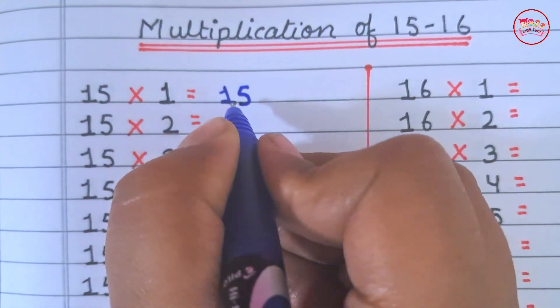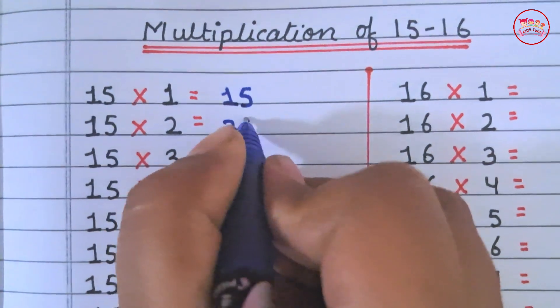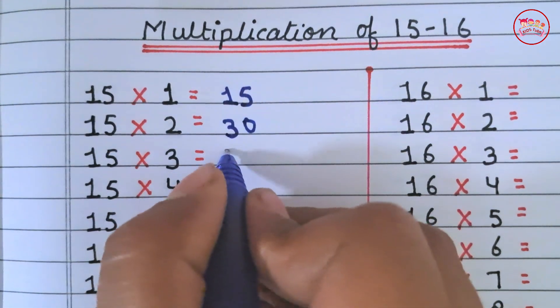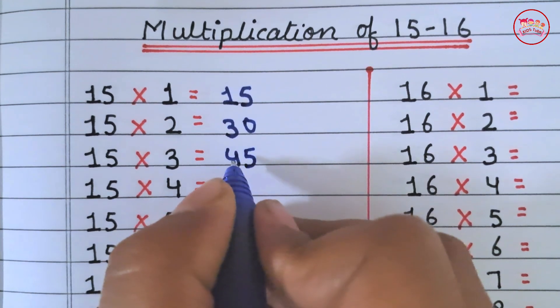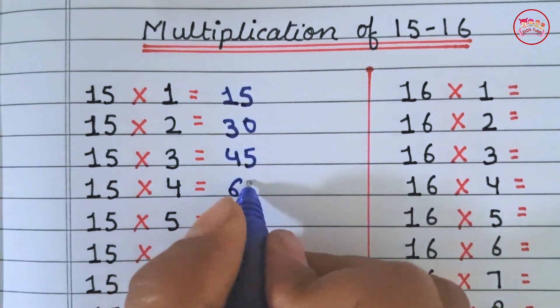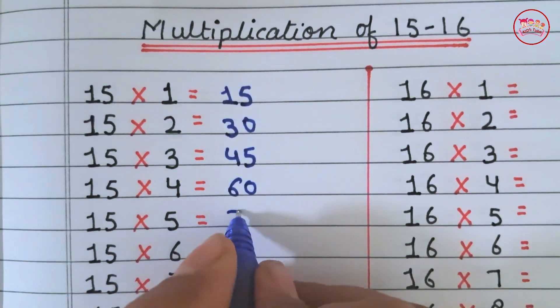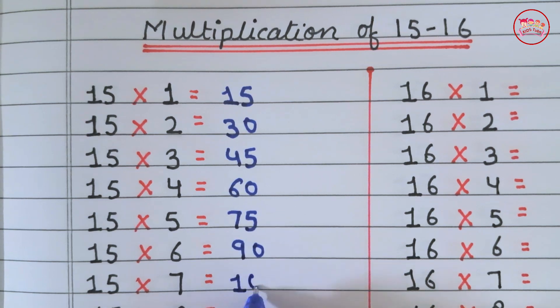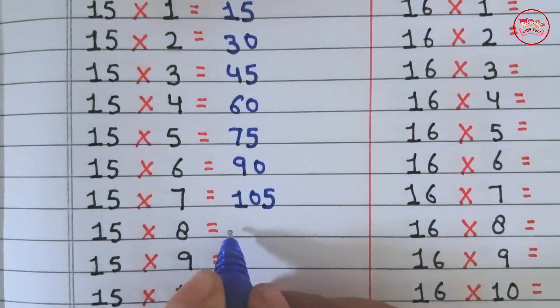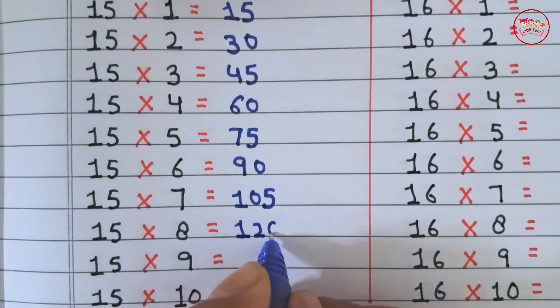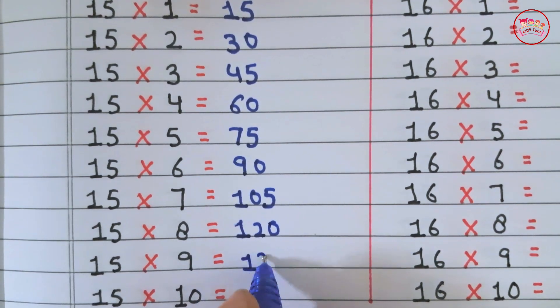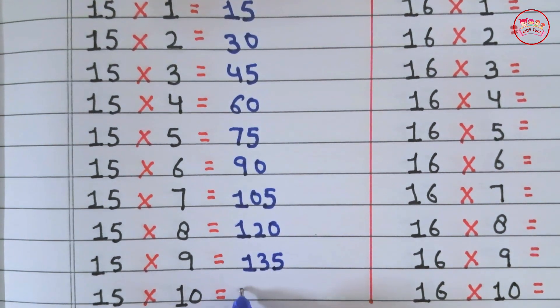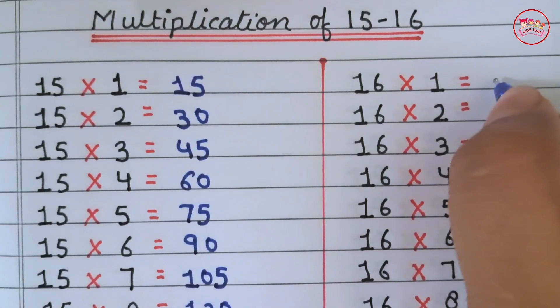Multiplication of 15 and 16. 15×1 is 15, 15×2 is 30, 15×3 is 45, 15×4 is 60, 15×5 is 75, 15×6 is 90, 15×7 is 105, 15×8 is 120, 15×9 is 135, 15×10 is 150.